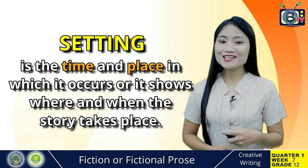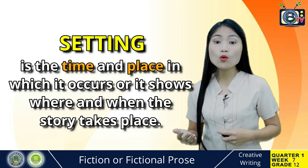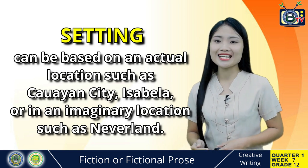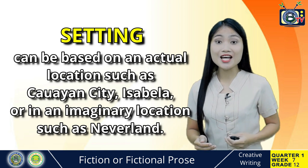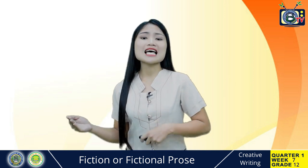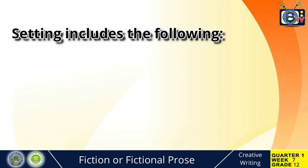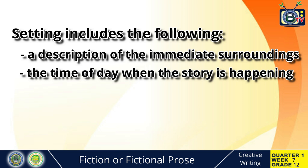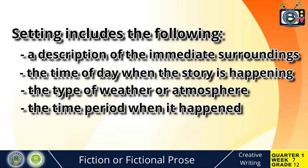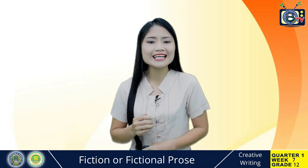Let us start with the setting. The setting of a story is the time and place in which it occurs, or it shows where and when the story takes place. The setting can be based on an actual location such as Kauai City, Isabella, or in an imaginary location such as Neverland. It may also happen in an actual or imaginary time period — in the present, sometime in the past, or even sometime in the future. Typically, a setting includes a description of the image and surroundings, the time of the day, the type of weather or atmosphere, the time period, and the geographical location.